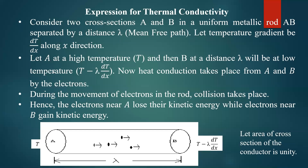End A is maintained at high temperature T, and end B is at a distance lambda from end A, so it will be at a lower temperature equal to T minus lambda times dT/dx. Because dT/dx is the temperature gradient, that much temperature is less compared to end A. Therefore the temperature at B is T minus lambda times dT/dx.